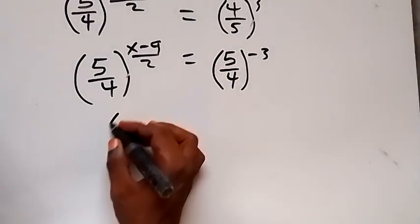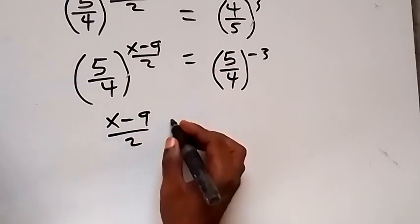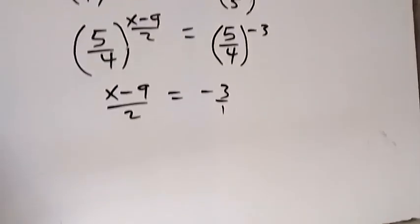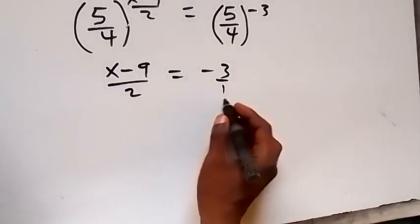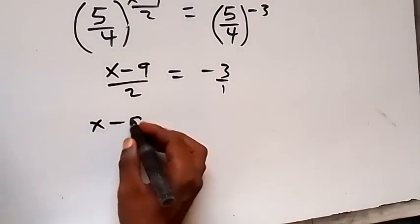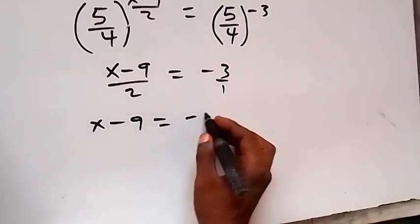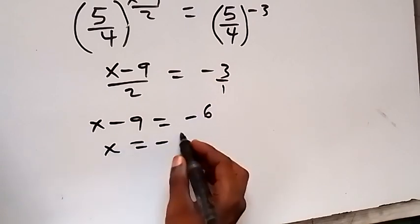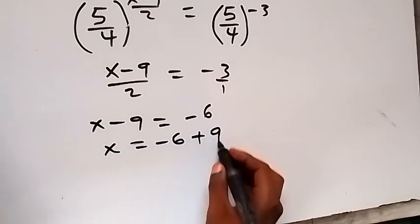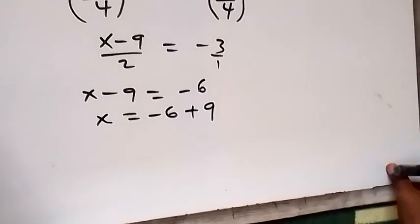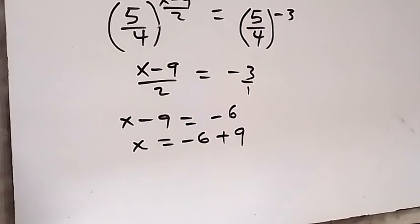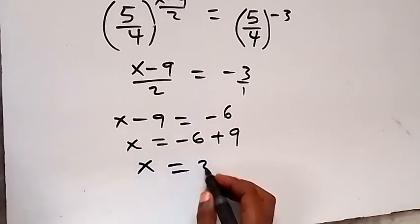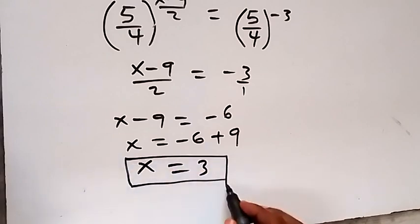Now that the bases are the same, we can equate the powers. This gives us x minus 9 over 2 equals minus 3. Then we cross multiply: x minus 9 equals 2 times minus 3, that's minus 6. We take minus 9 to the other side, so x equals minus 6 plus 9, which is 9 minus 6, and that gives us x equals 3.